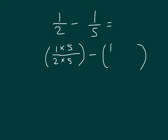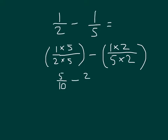We have 1 times 2, and 5 times 2, and then we do that work. For this first fraction, 1 times 5 is 5, and 2 times 5 is 10. So our equivalent fraction for 1 half is 5 tenths, and our equivalent fraction for 1 fifth is 1 times 2, which is 2, over 5 times 2, which is 10.